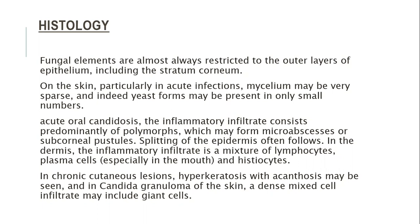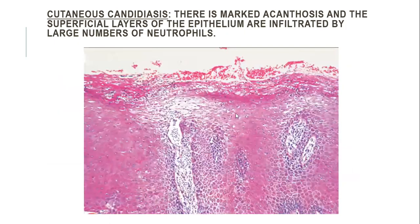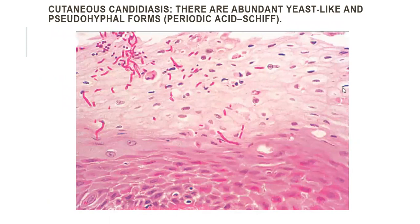In chronic cutaneous candidiasis, hyperkeratosis with acanthosis may be seen, and in Candida granuloma of the skin, a dense mixed cell infiltrate including giant cells is also present. This picture shows marked acanthosis of the epidermis, and superficial layers of epithelium are infiltrated by large numbers of neutrophils forming neutrophilic abscesses. On PAS stain you can see the yeast budding forms as well as pseudohyphae.